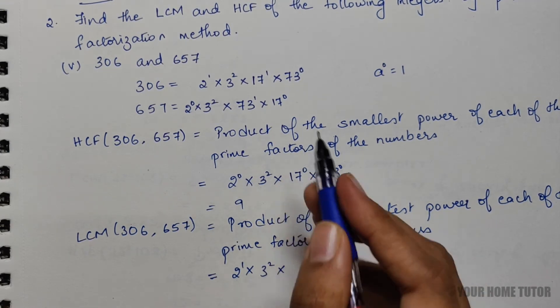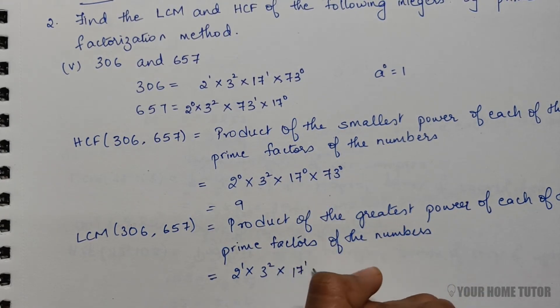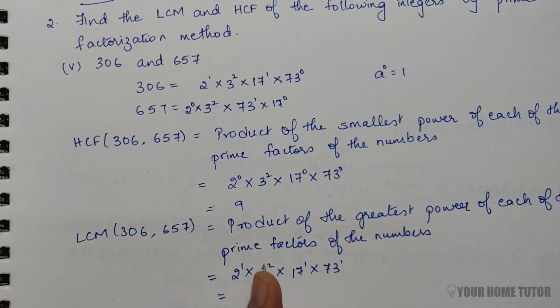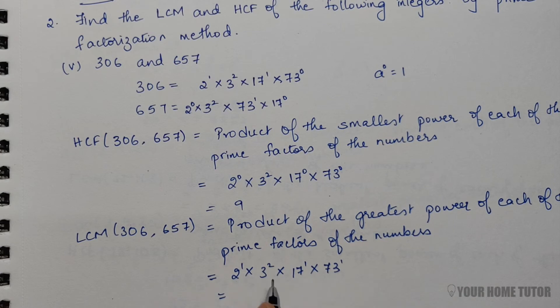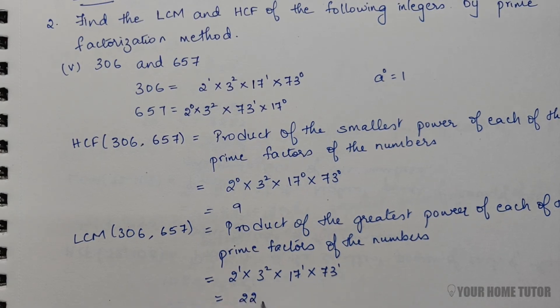The highest power of each of the prime factors of the numbers. So finally this gives us 22,338. You can now check the screenshot of the solution.